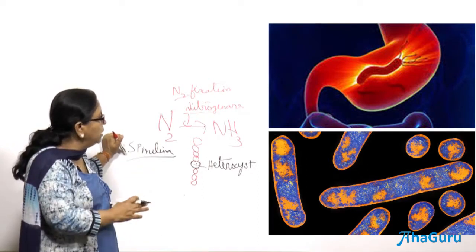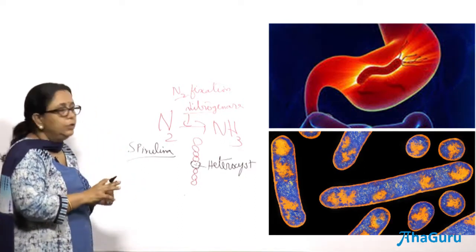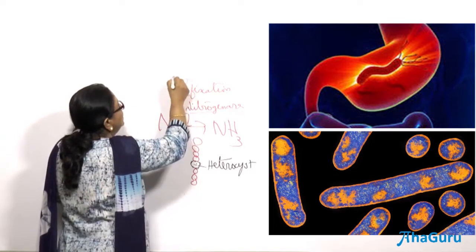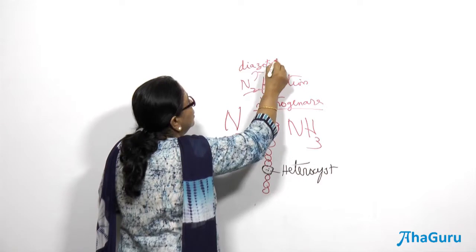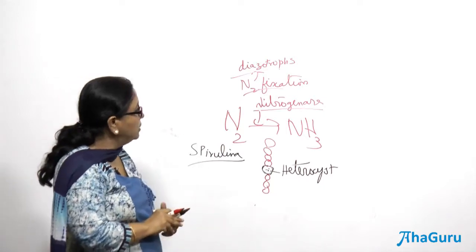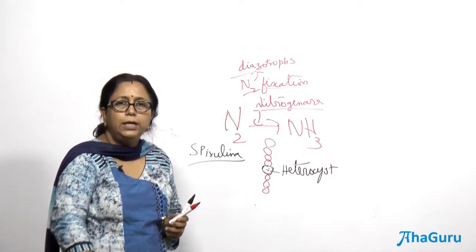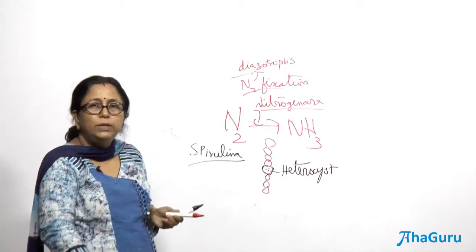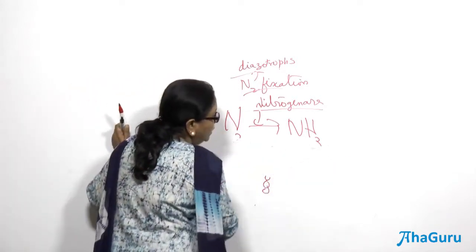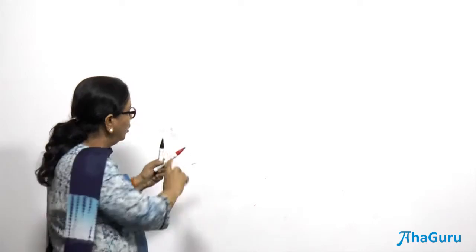Cyanobacteria are also called nitrogen-fixing bacteria, or diazotrophs — diazotroph means nitrogen-fixing. Apart from cyanobacteria, many other bacteria cause diseases, and some are saprophytes. A group of bacteria called proteobacteria includes most gram-negative bacteria, such as enteric bacteria like Salmonella and E. coli. It is a major phylum because it shows highly variable metabolism.